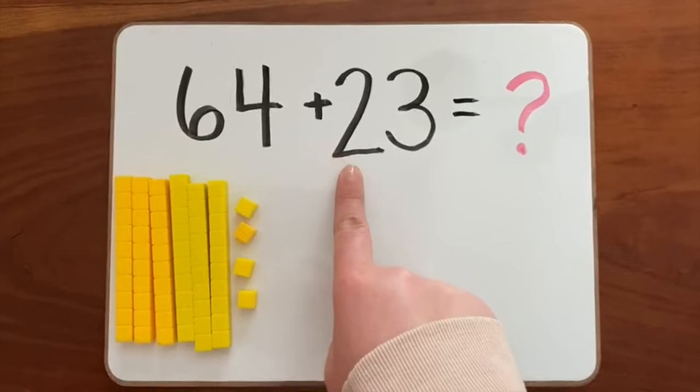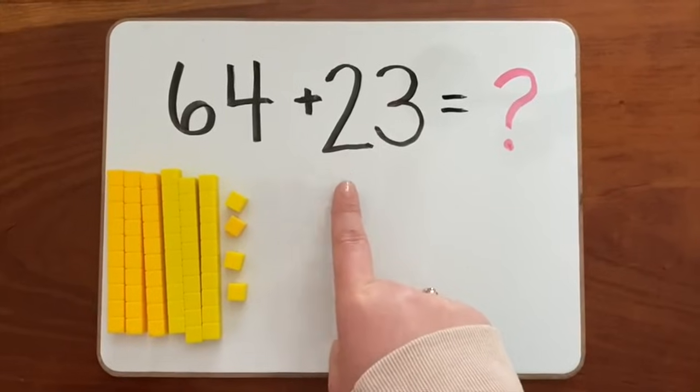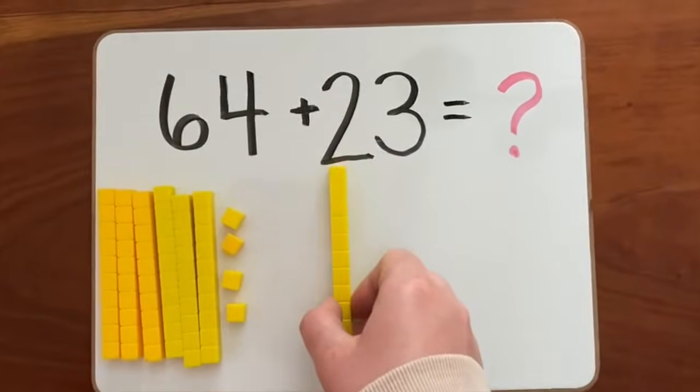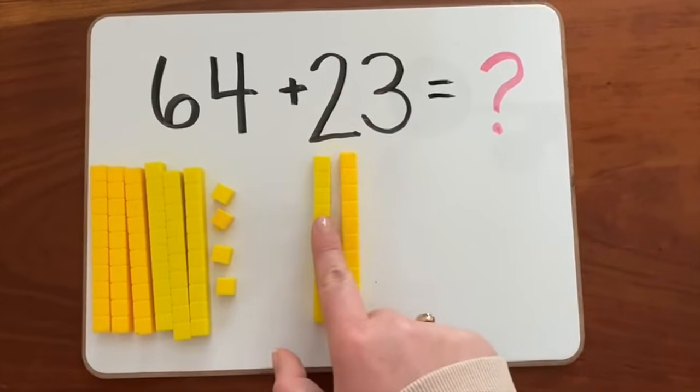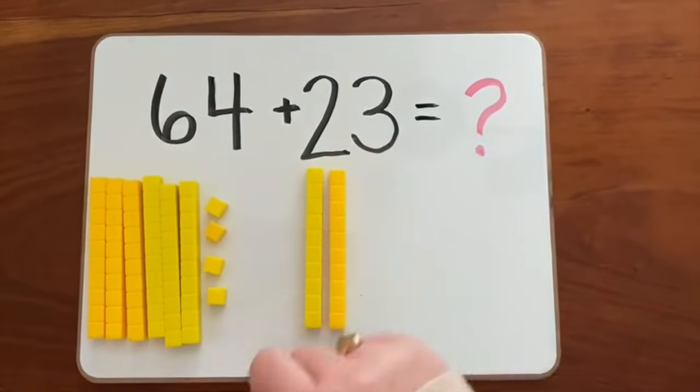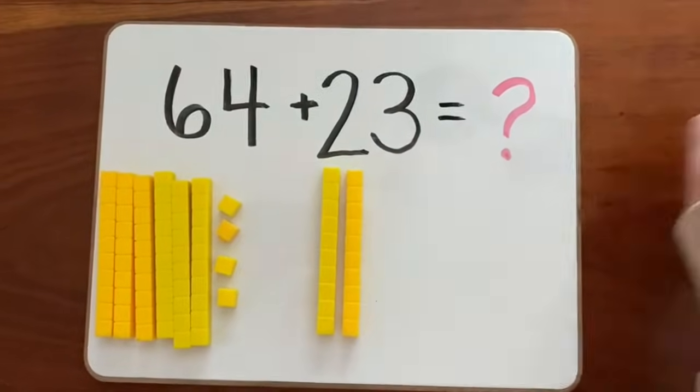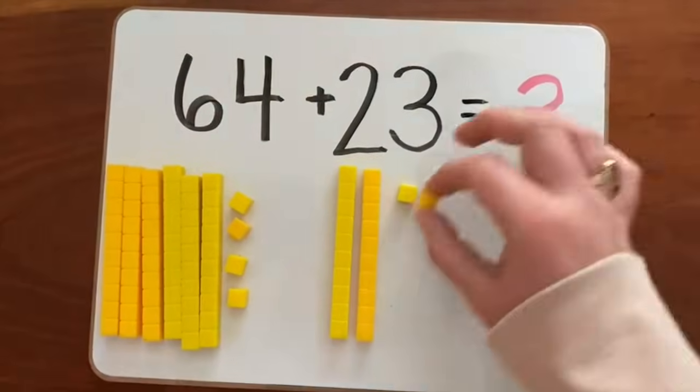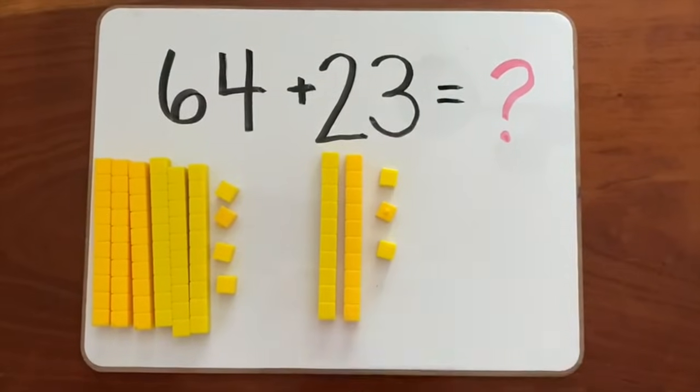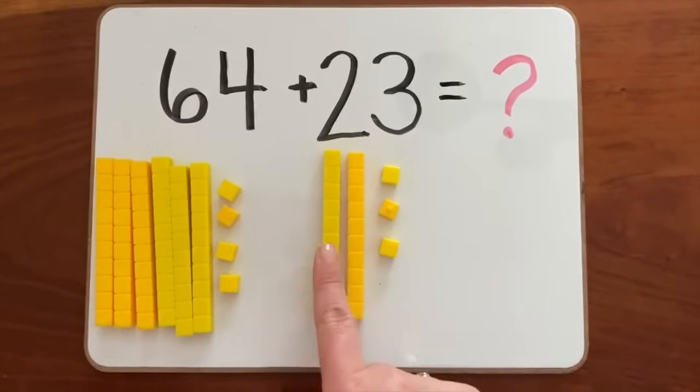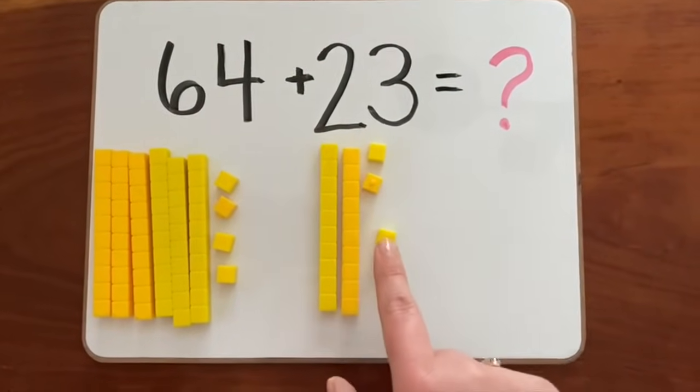So we made the number 64, now we need to make the number 23. The two is in the tens place for the number 23, so we need two longs because the longs are worth 10. We have our two longs, which are worth 20, for the number 23. And we need how many cubes? 1, 2, 3 cubes because we have a three in the ones place. Let's double check this number: 10, 20, 21, 22, 23.